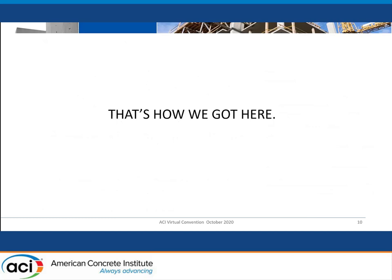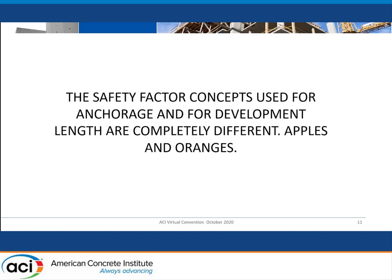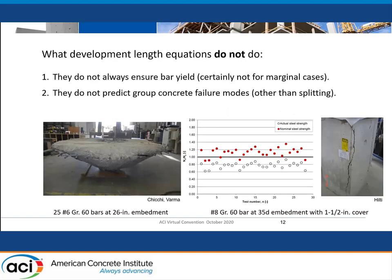So fundamentally, that's how we got here. We ended up with a development length concept that was stretched language-wise into applying to a lot of things that it really didn't originally belong to, and I believe this is a problem for us. The safety factor concepts are completely different — we can say apples and oranges. That difference in safety factor concepts is a large part of this, and one can discuss the merits of 5% fractiles or mean values, but ultimately the code should come to some sort of organized decision about this.